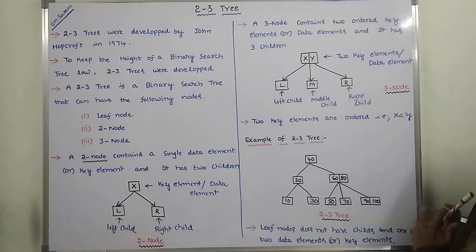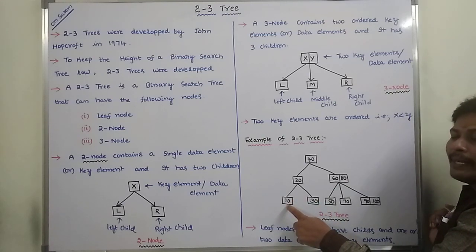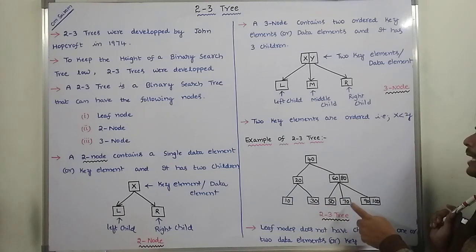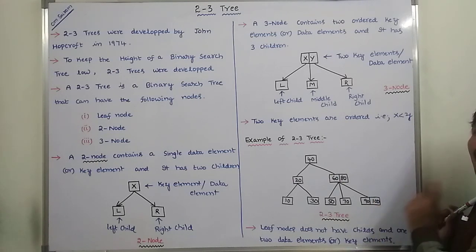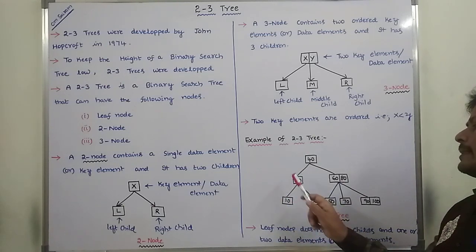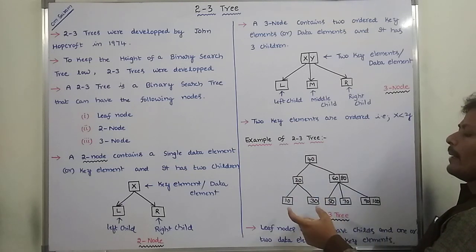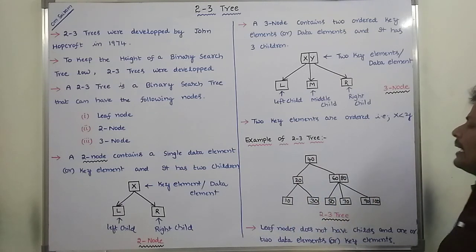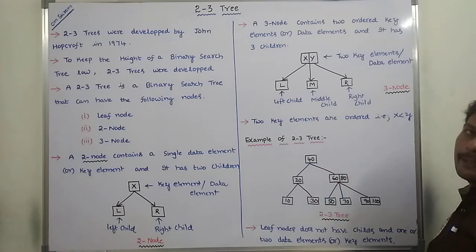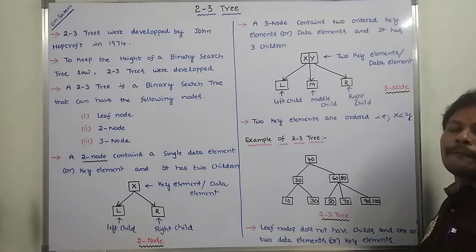The leaf nodes do not have any children and have one or two data elements. Some leaf nodes contain a single data element, while one contains two data elements. There are also two nodes in this tree: each two node contains a single data element and has two children.